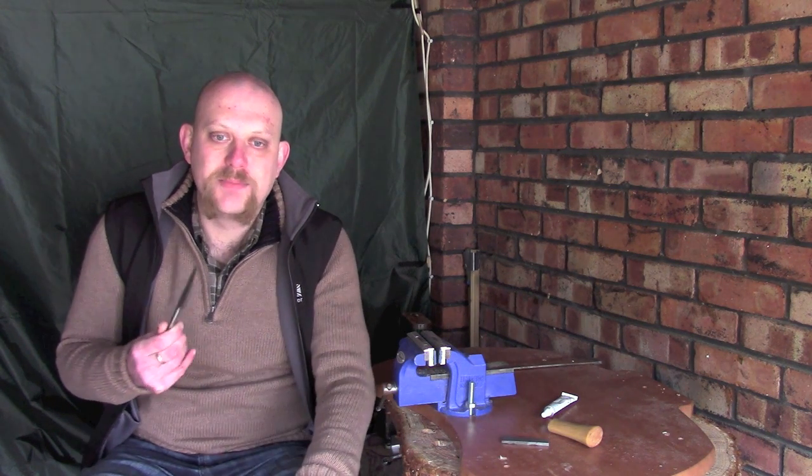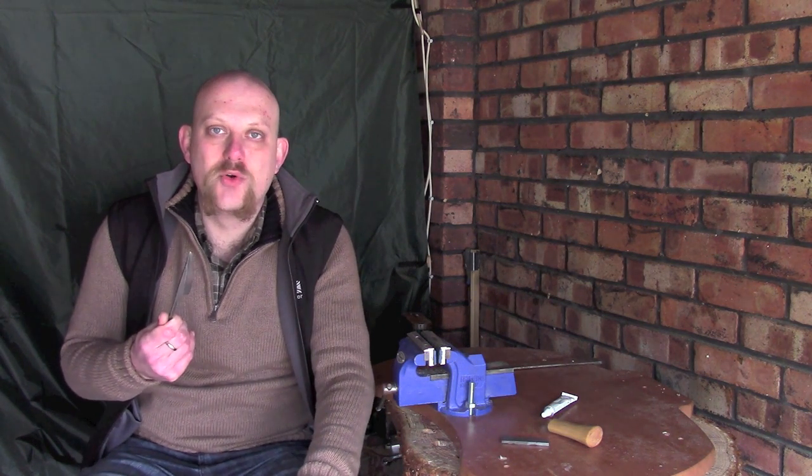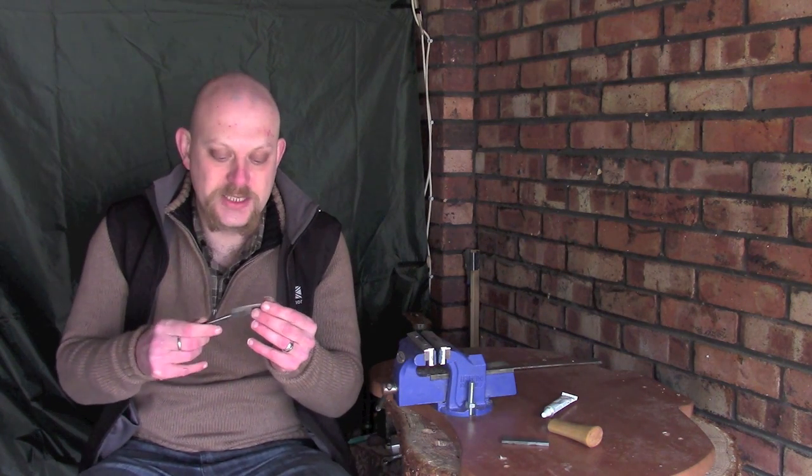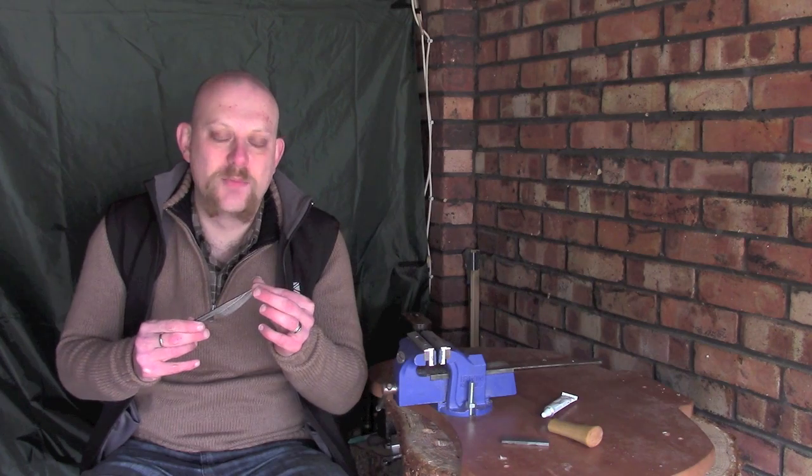The first thing I wanted to talk about today was I have been having a debate as to whether or not I try and etch this blade. Using something like ferric chloride, which is what you'd normally use for a pattern welded blade like this, essentially just brings out the pattern of the blade.